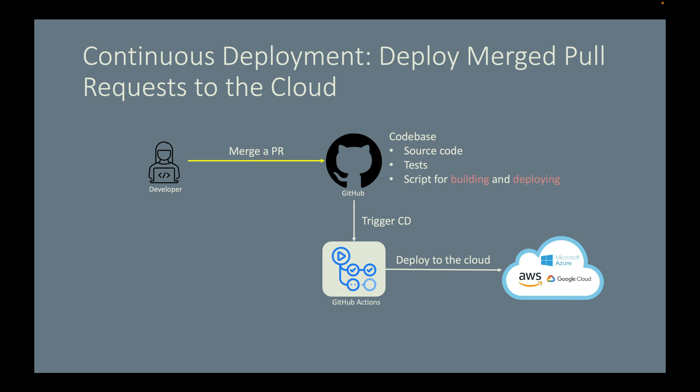Here is the gist of the CD workflow: when a pull request is merged into the main branch on GitHub, this triggers a build and deploy workflow. GitHub Actions reads the script and runs the build and deploy workflow on this merge event. Note that there is no testing phase, since this pull request should have already passed all tests during the CI workflow. As you can see, CI and CD really go hand in hand.